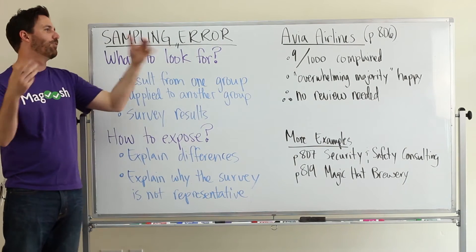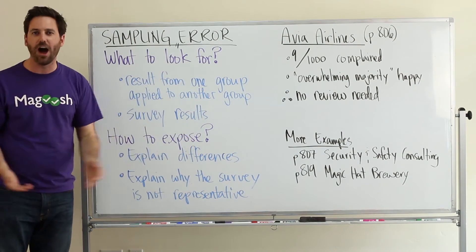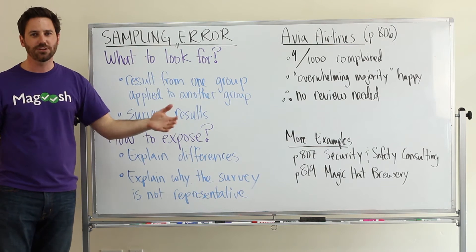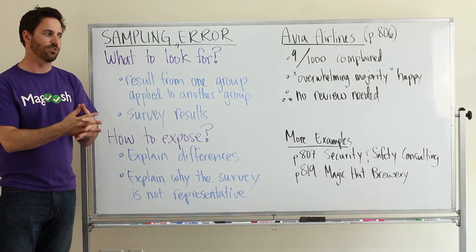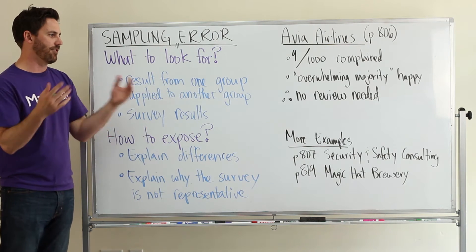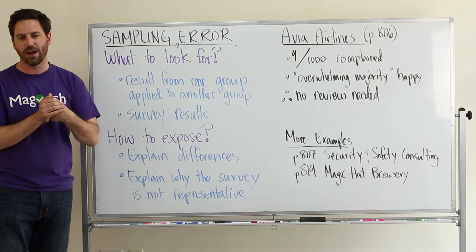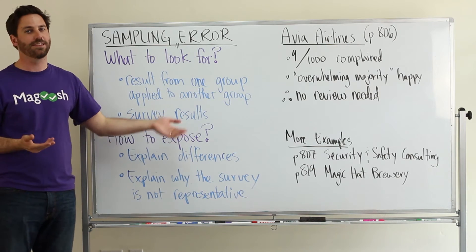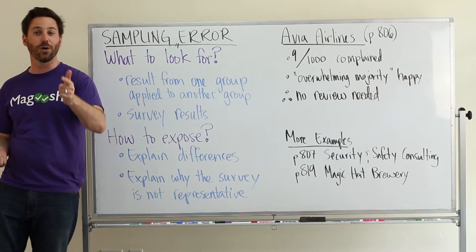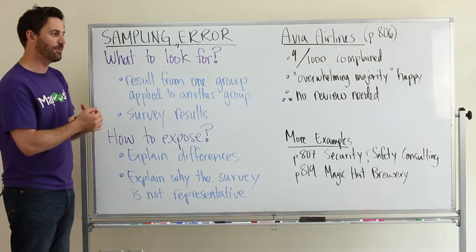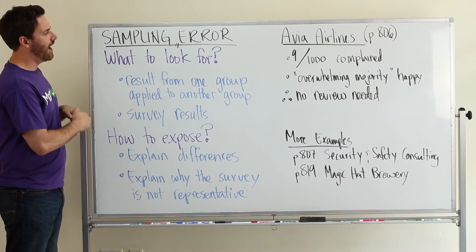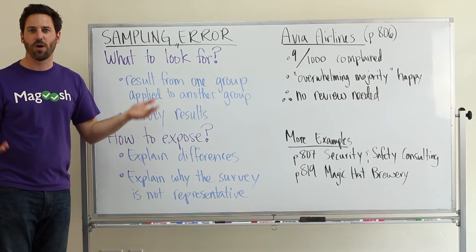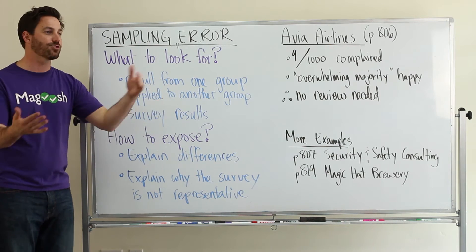Was it representative of the population that you're trying to gather information about? So if you don't see that information in the argument — which you won't, because they're really short — you'll want to talk about why you can't trust the survey results because it might not represent the entire group.